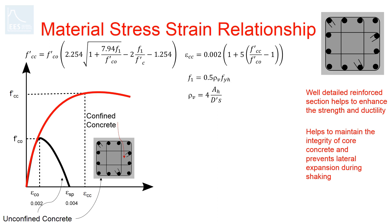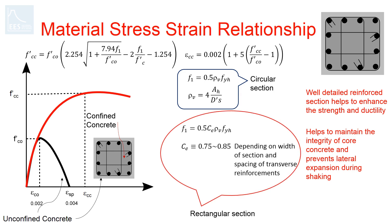In this equation, rho_v is the volumetric confinement ratio. For a circular section, this equals four times the area of transverse reinforcement divided by the diameter of the confined core, measured to the centerline of the hoop or spiral, and s, which is the spacing of the hoop or spiral along the section's longitudinal axis. For a rectangular section, this is multiplied by a new term ce, which varies from 0.75 to 0.85 depending on the width of the section and spacing of the transverse reinforcements.